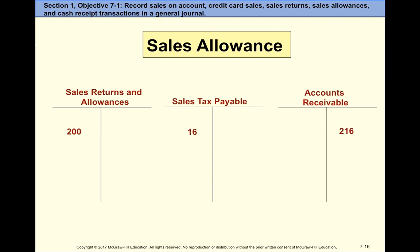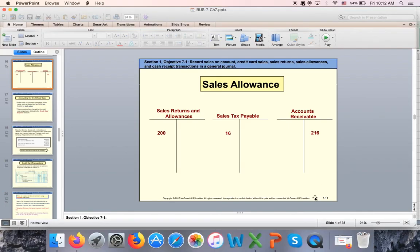So this is the last slide in this part of the video. When we record a return from a customer on credit, these are the three accounts and how they are impacted: sales returns goes up, sales tax payable goes down, and accounts receivable goes down. I will finish this chapter lecture in the next video — thank you so much.